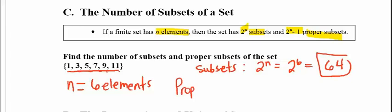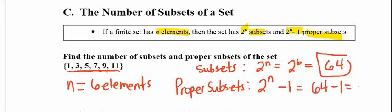The number of proper subsets cannot include the original subset in the list, so we take 2 to the n and subtract 1 from it. So we have 64 minus 1, or 63, proper subsets.